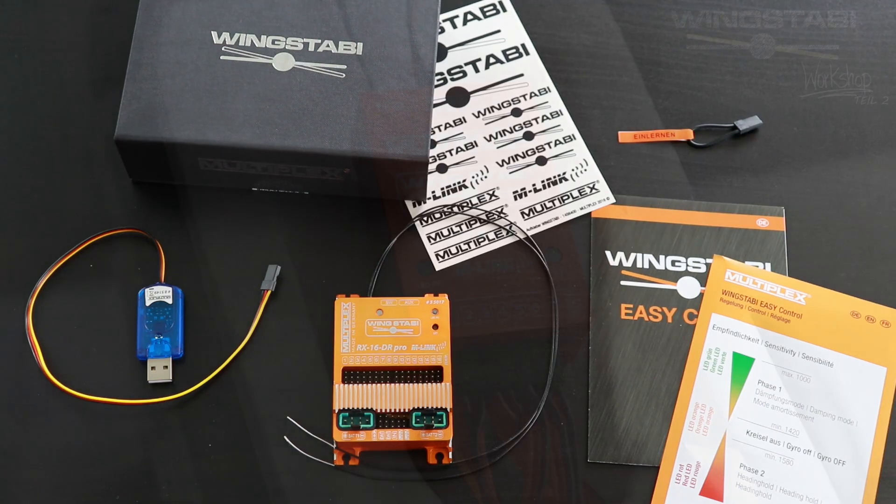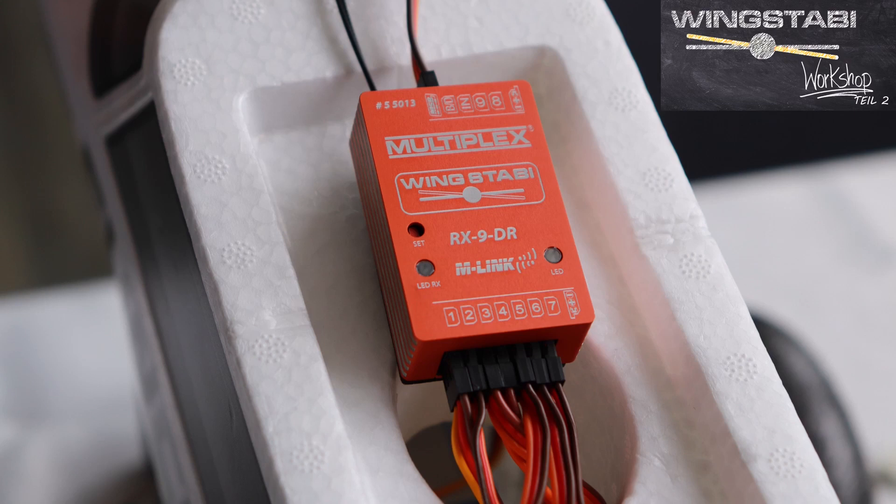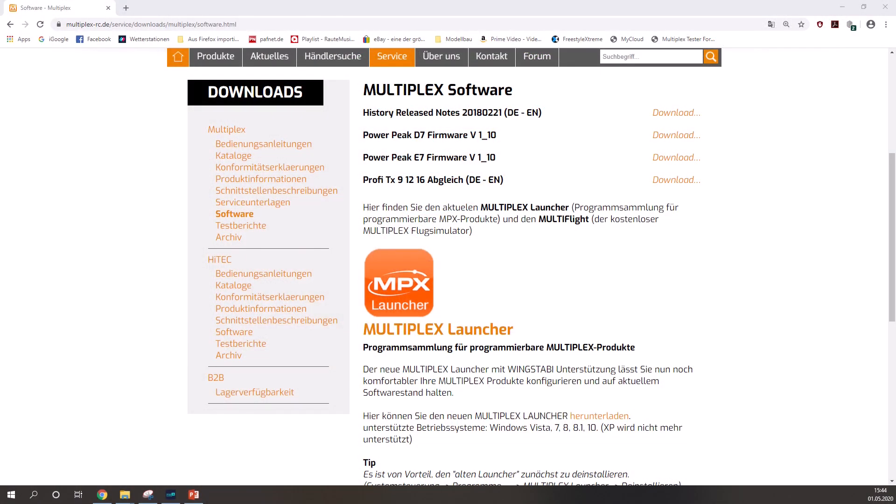We will also look at how you get the teach-in without any software. The first step is to get all the servo connectors in the right part of your Wing Stubby. If you don't have enough space to get to your battery data port, it's useful to put a servo extension lead on it to plug in the PC interface or the teach-in plug or the Bluetooth module. It's possible to run Wing Stubby Easy Control without any software, but to get the full performance out of it, I advise you to download the Multiplex launcher.